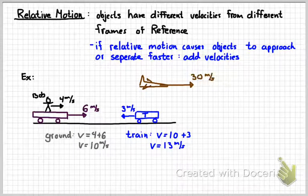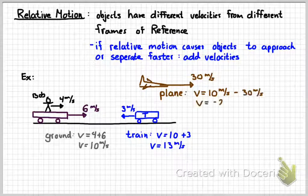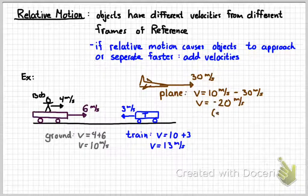If an object moves in the same direction as Bob, they separate more slowly. For instance, a plane flying at 30 meters per second in the same direction — the relative motion causes them to separate slower, so we subtract the velocities. Bob's velocity relative to the plane is 10 minus 30, giving negative 20 meters per second. From the pilot's perspective, Bob appears to be moving backwards.